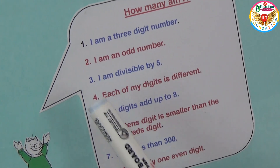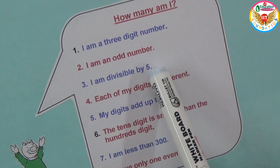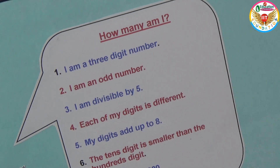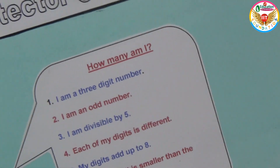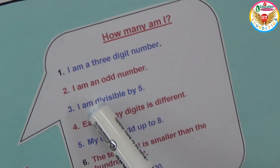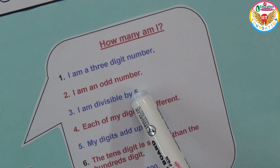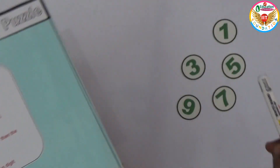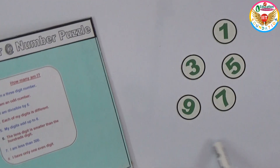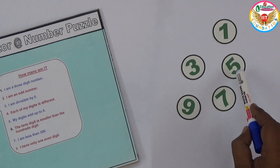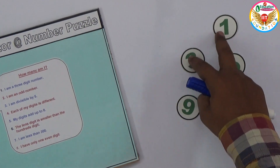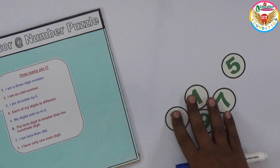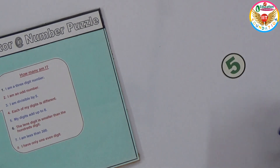The next clue says I am divisible by 5. The divisibility rule of 5 states the units place must be either 0 or 5. Since we already removed 0, the last digit must be only 5. So the units place is fixed as 5.